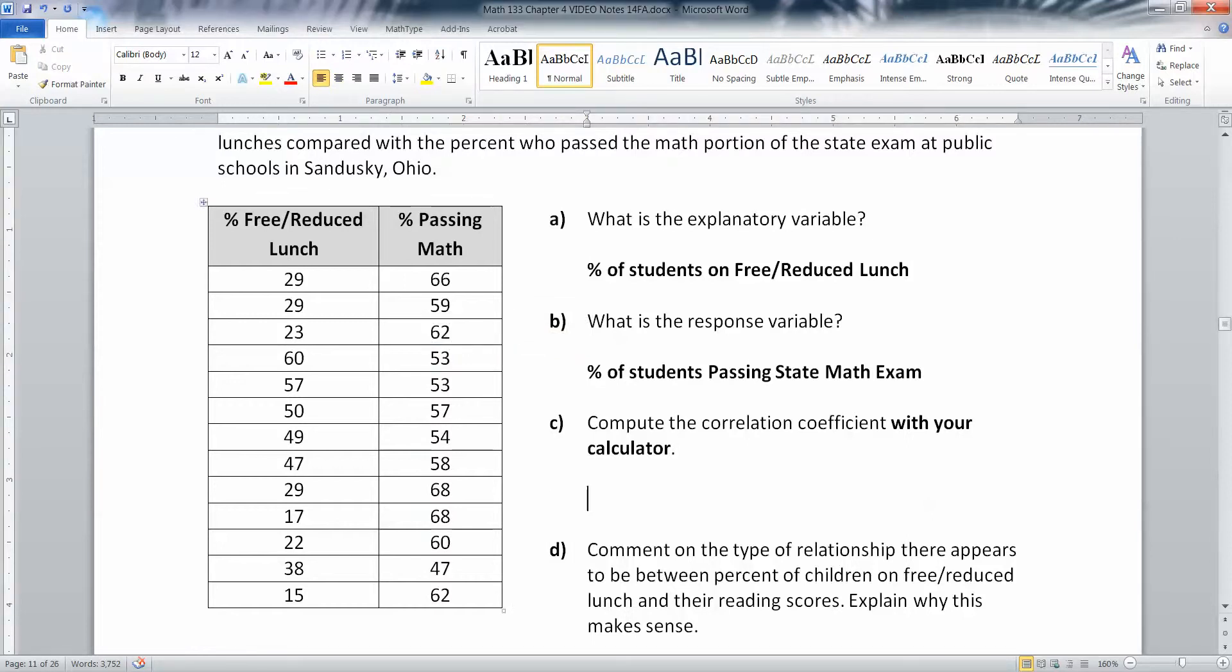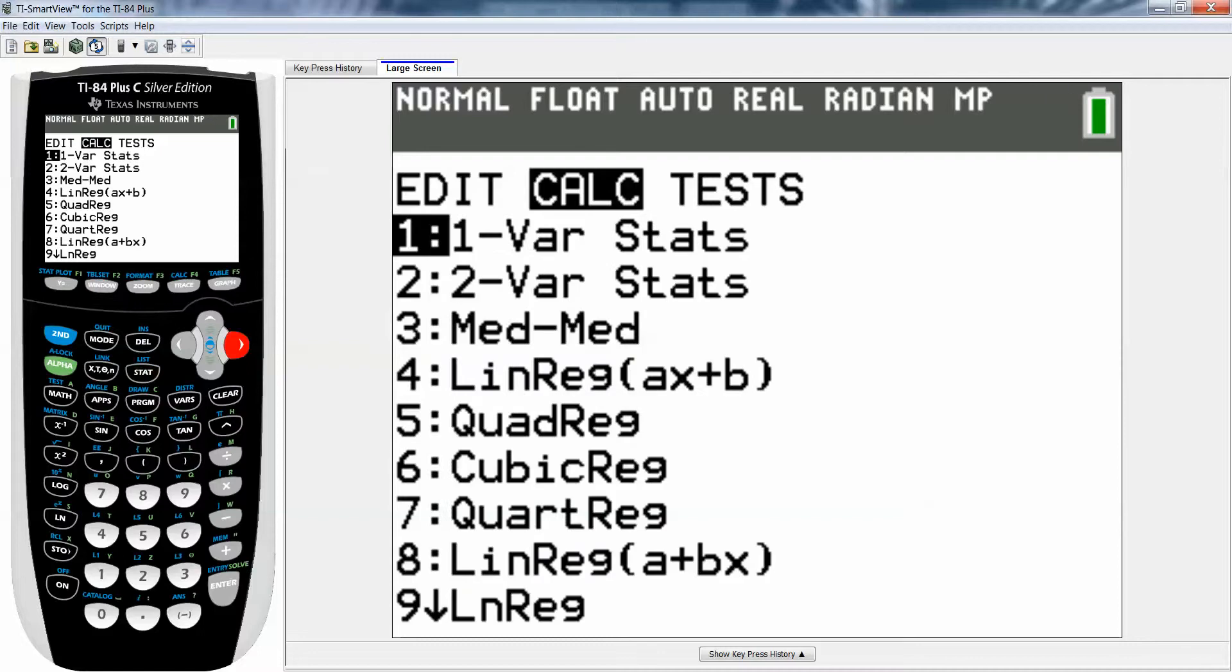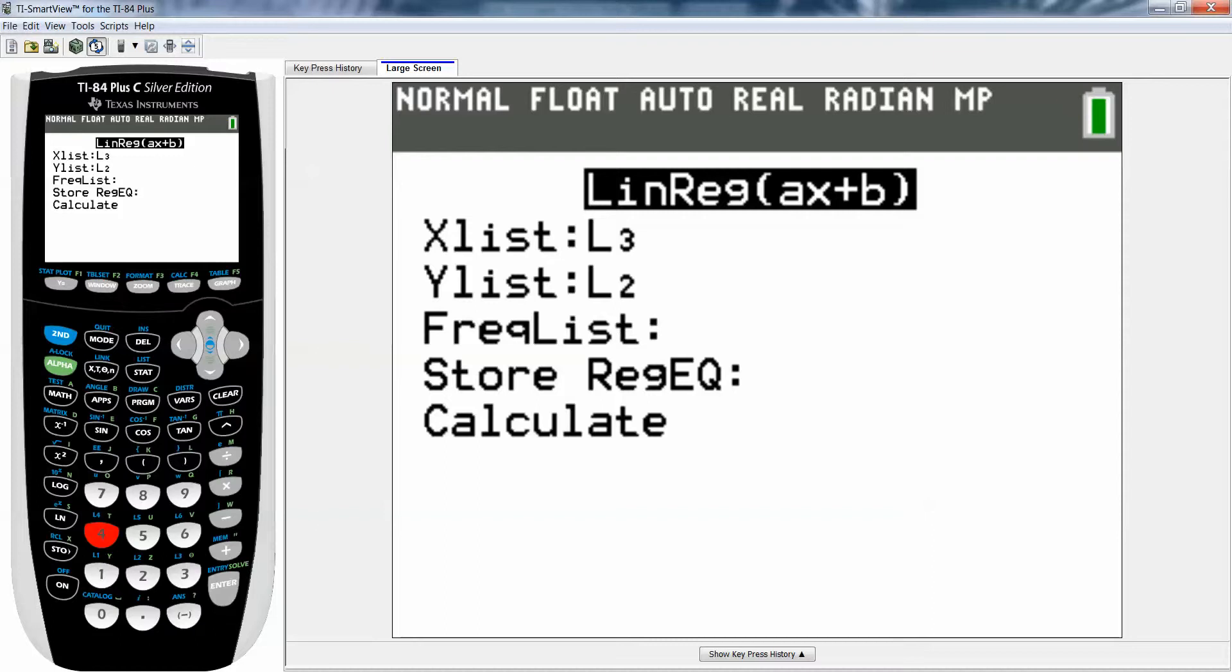We're going to compute the correlation coefficient with our calculator because nobody wants to do this by hand. Once you have your data entered, you press stat, then you move to the right to calculate, and you want number four, which is linear regression. It wants to know what was my X and what was my Y. X is your explanatory, and that was in L1, so second one L1. The Y list was in L2, so second two. Frequency list in our course will always be blank, that's a more advanced option. I'm just going to go down to calculate and press enter.